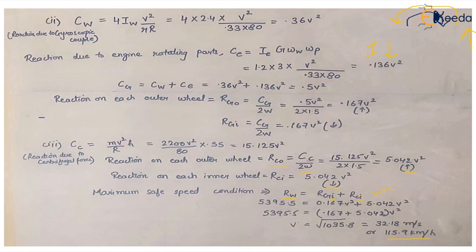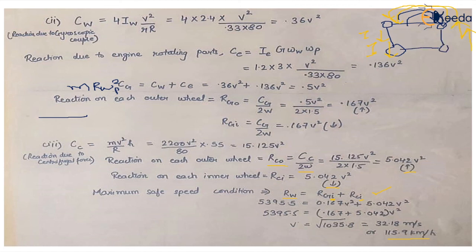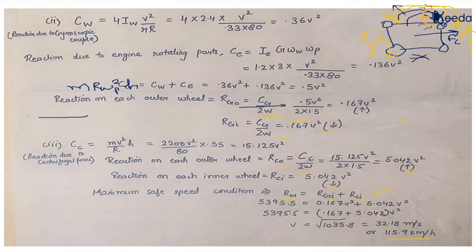Next, we calculate the reaction due to centrifugal force. Centrifugal force is m × R × ωp², acting at the centroid. The centrifugal couple is m × R × ωp² × h, where h is the vertical distance between the centroid and the ground. Substituting the values gives 15.125 v square. Here v is the unknown linear speed of the vehicle that ensures stability is maintained.